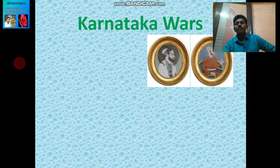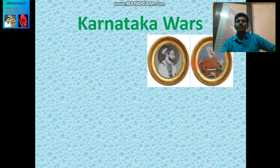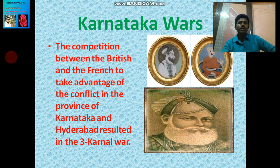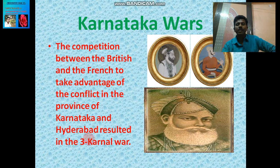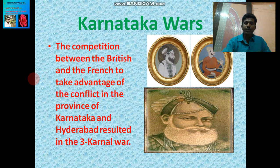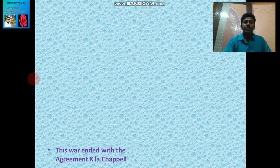The main persons involved were Nasir Jung, Muzaffar Jung, and Anwar-ud-din, whose pictures you are looking at. The Carnatic Wars took place because of the competition between the British and French to take advantage of the conflicts in the Carnatic and Hyderabad provinces, resulting in the three Carnatic Wars.